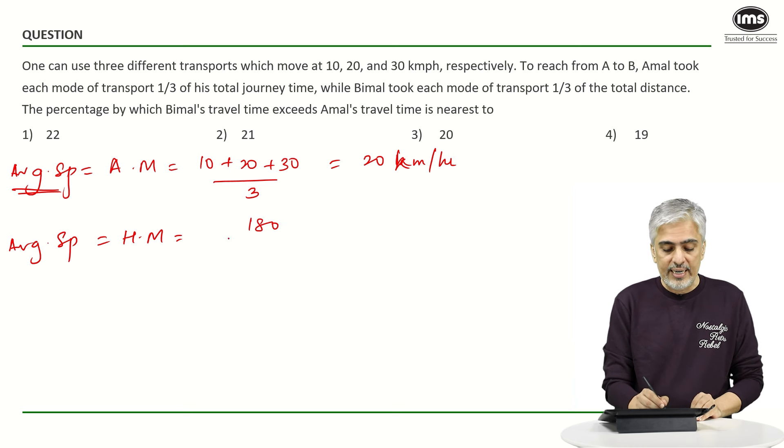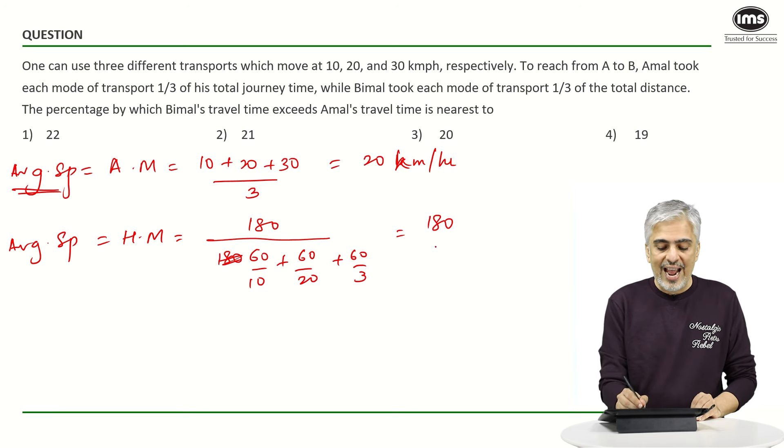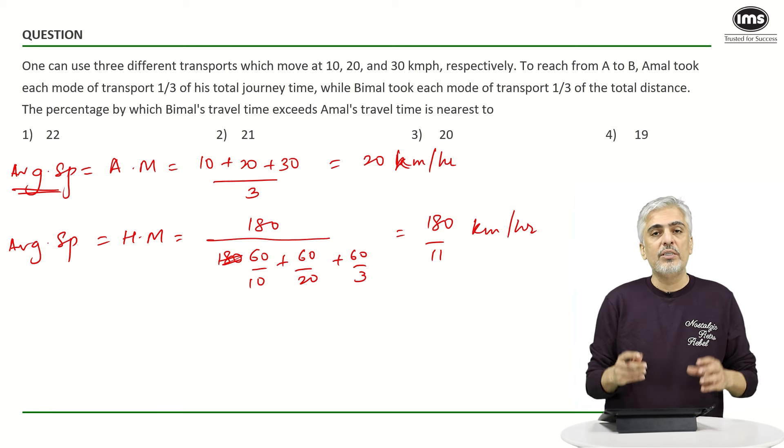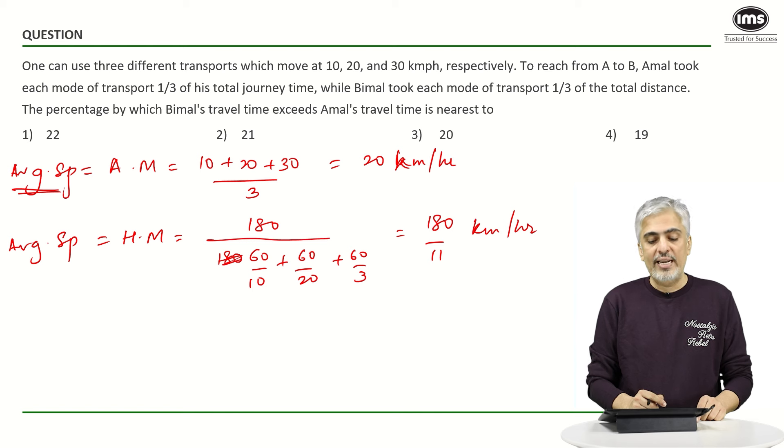Harmonic mean would be 180 upon 60 upon 10 plus 60 upon 20 plus 60 upon 30 which becomes 180 upon 11 as in the earlier case. I have told you the calculation does not change much, but the whole thought process that it is directly harmonic mean changes. So 180 upon 11 becomes your average speed.